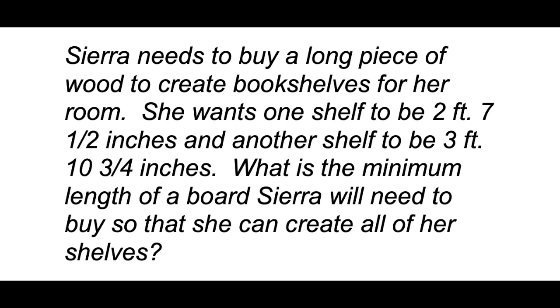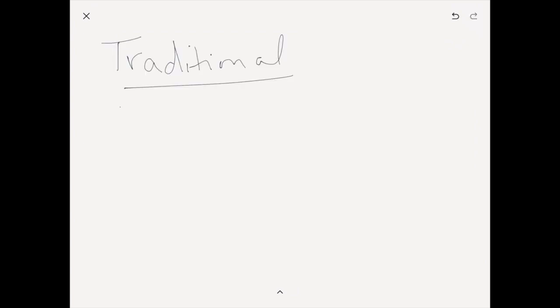The problem we are going to use to show all of these strategies is: Sierra wants to build some shelves for her room. She wants one shelf to be two feet seven and a half inches. The other shelf is going to be three feet ten and three-fourths inches. What is the minimum length of a board that Sierra needs to buy to be able to build those shelves? The traditional way to solve that problem is to just set it up and add two feet seven and a half inches plus three feet ten and three-fourths inches.